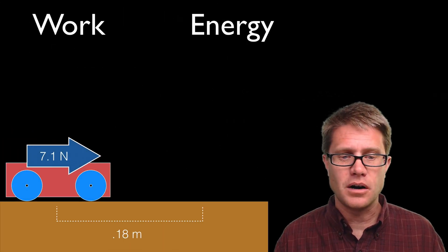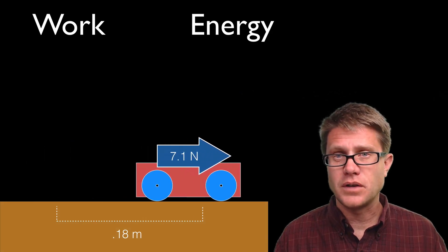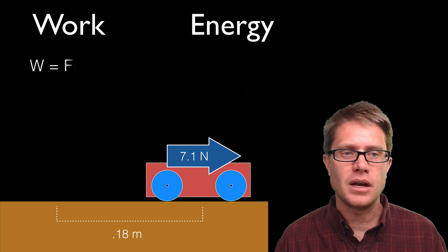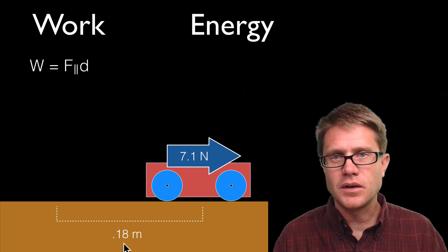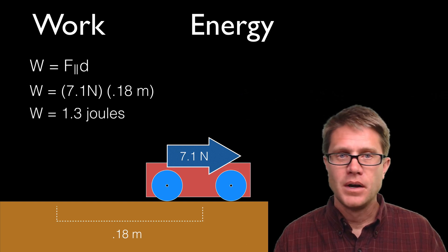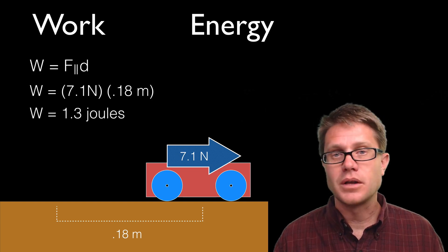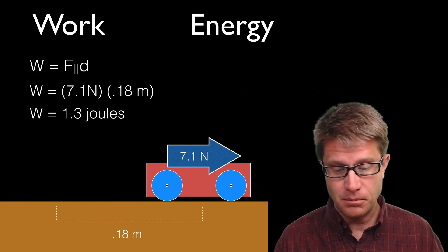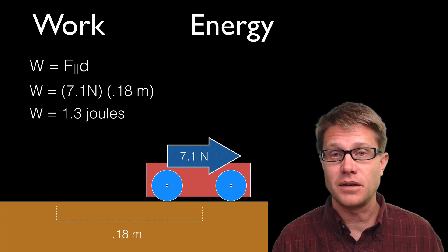Let's start simple. We have a cart moving from left to right and we are applying a constant force of 7.1 Newtons. Work is equal to the force parallel — in the direction of that motion — times the distance. Since we are given a force of 7.1 Newtons times the distance of 0.18 meters, it is really simple to solve: the work is simply 1.3 joules. That is the amount of work done on the cart, and it also shows us the amount of kinetic energy added to that cart. We do not have to figure out mass and velocity separately.